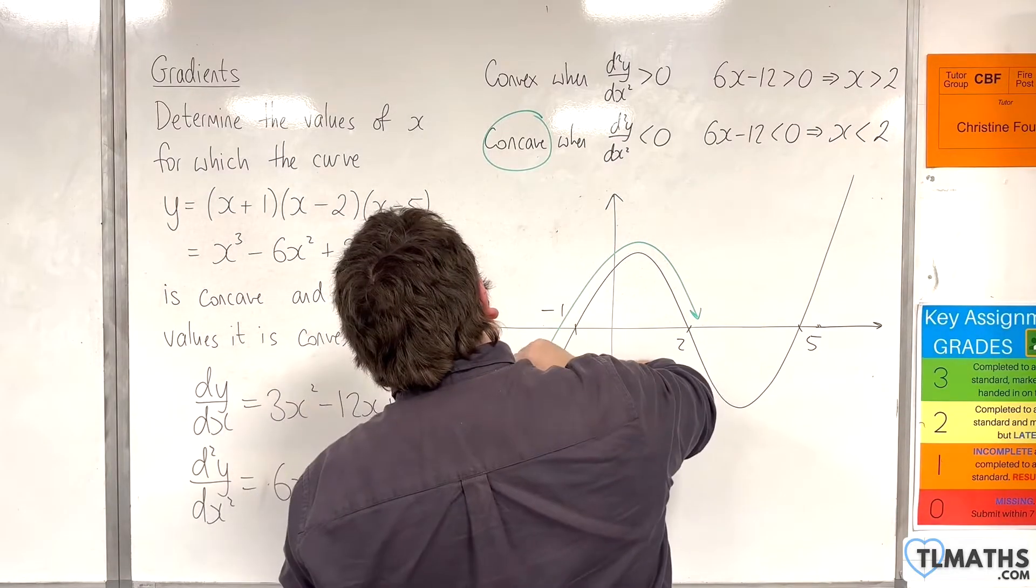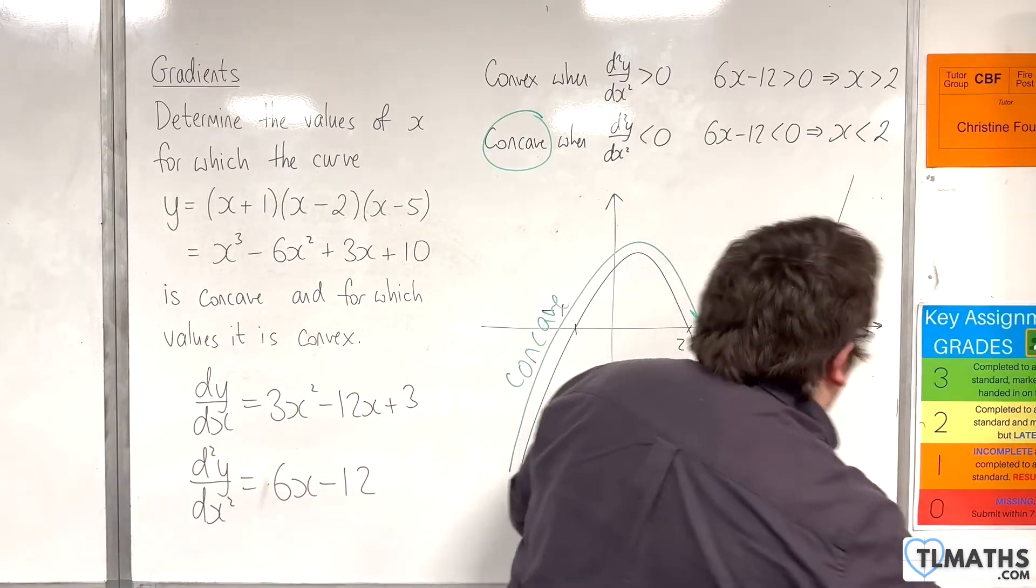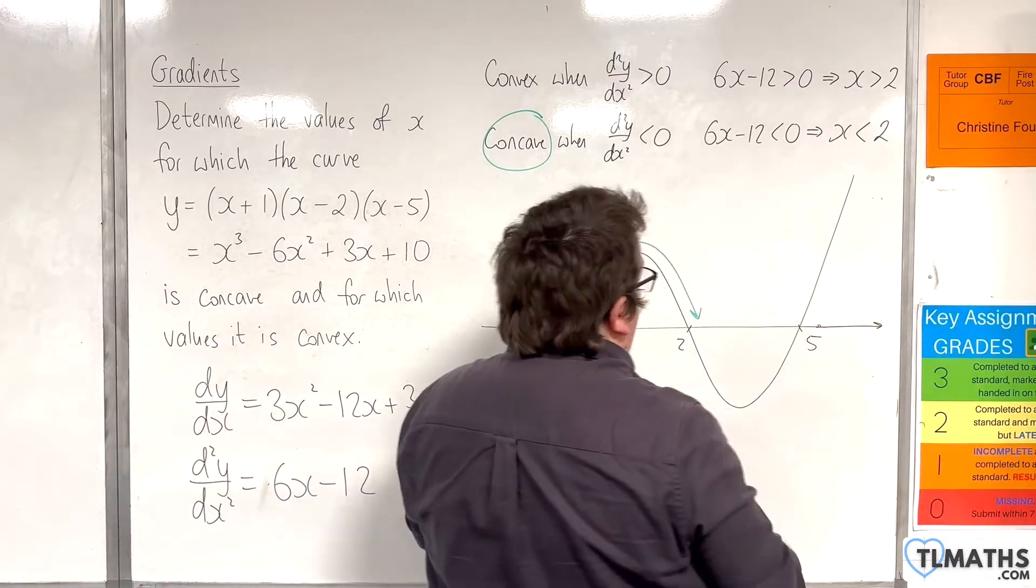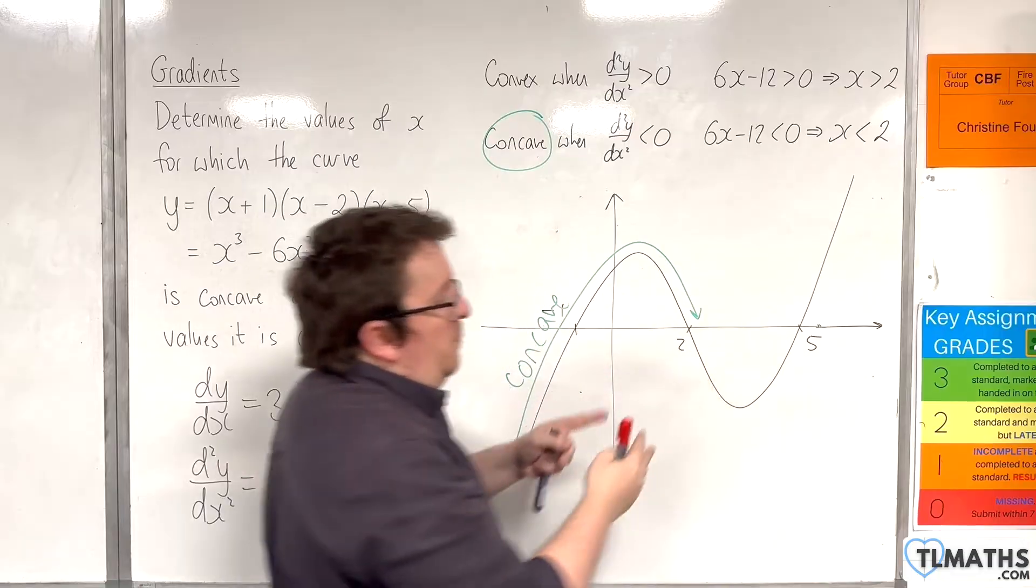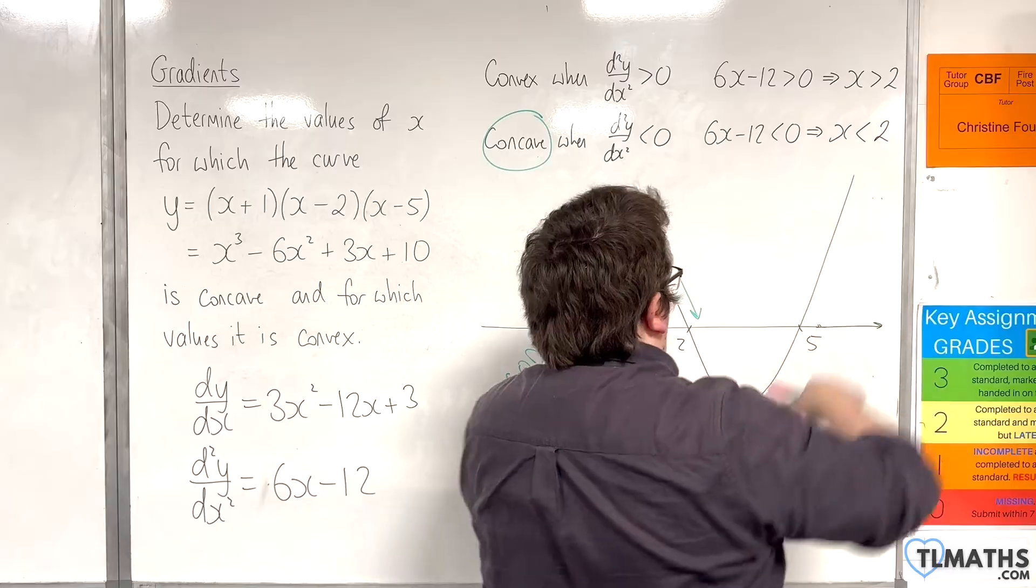So, this is concave, and then continuing our way around, at 2, that is the point at which it changes from going clockwise to anticlockwise.